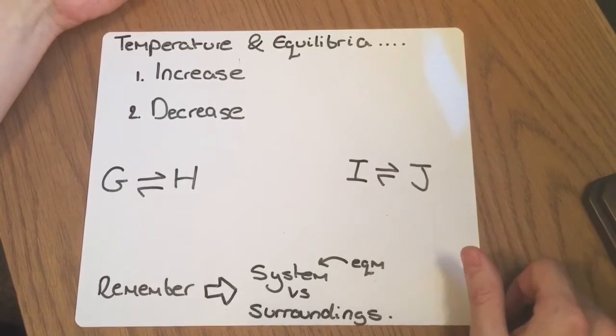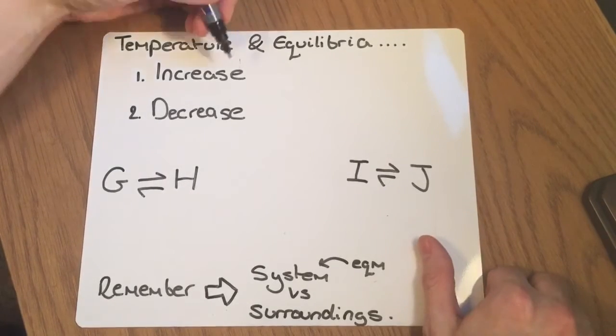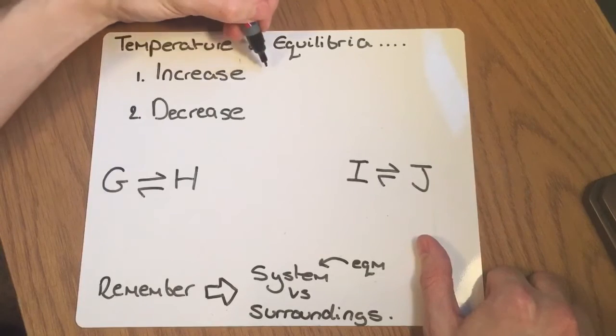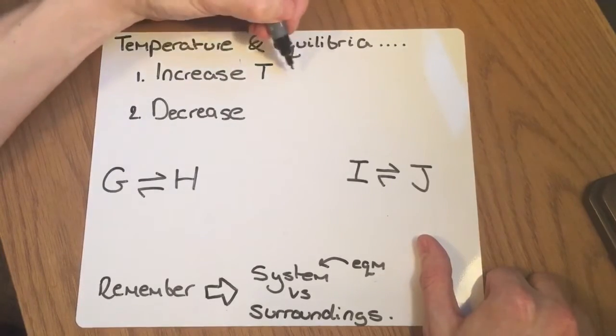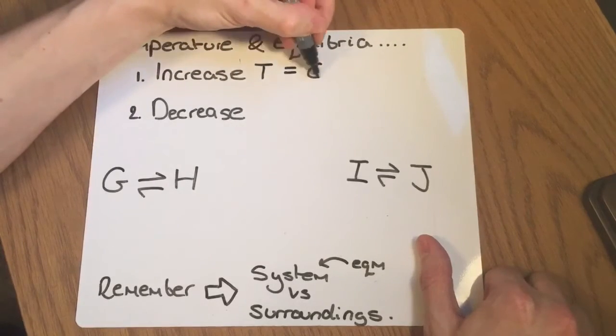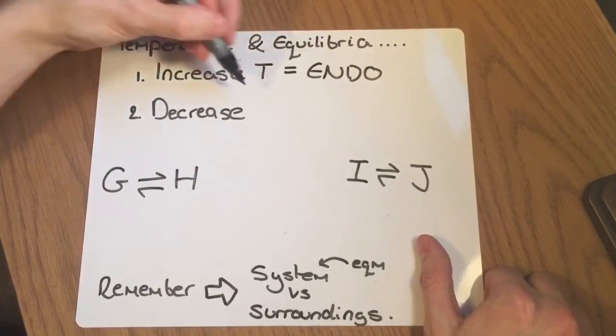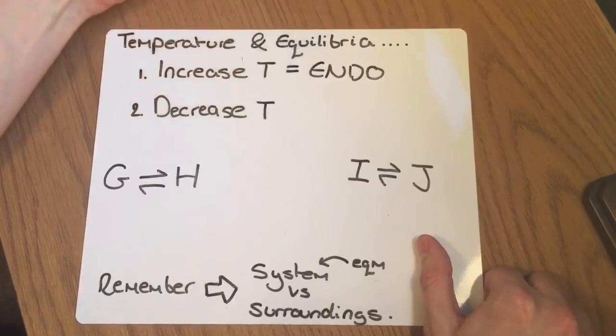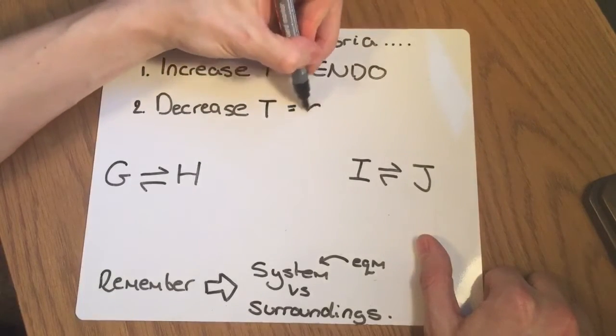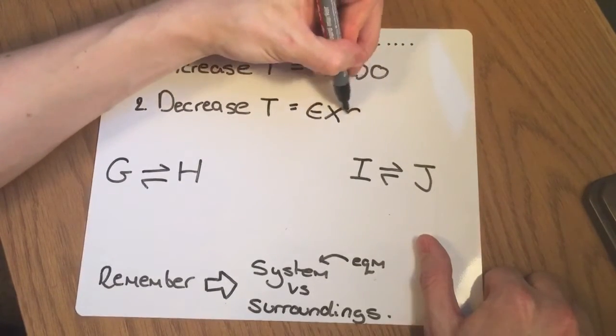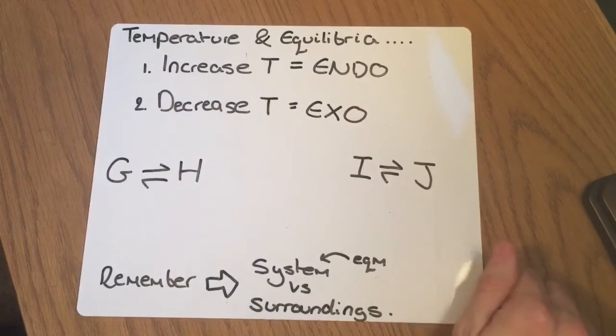The only thing I can guarantee to you every time is, if you do ever increase the temperature, then you are always going to shift in the endothermic direction. If you were to ever decrease the temperature, then you would always shift in the exothermic direction.